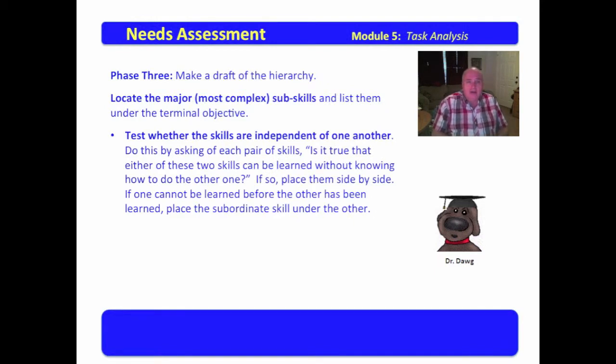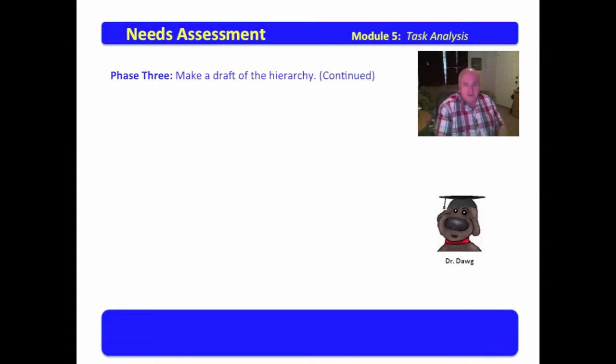Now, phase three, you make a draft of the hierarchy. Locate the major, most complex sub-skills, and list them under the terminal objective. You test whether the skills are independent of one another. Do this by asking of each pair of skills, is it true that either of these skills can be learned without knowing how to do the other? That means they're independent. We don't have to know A in order to do B. We don't have to know B in order to do A. You may find that these skills are at the same level, and you can place them side by side. If one must be done before the other, then you can indicate that the other one is subordinate to it.